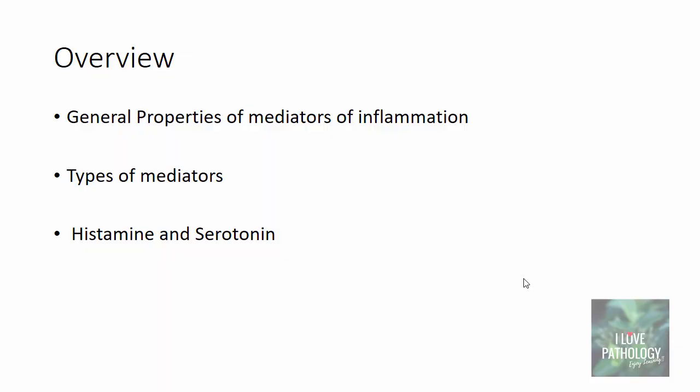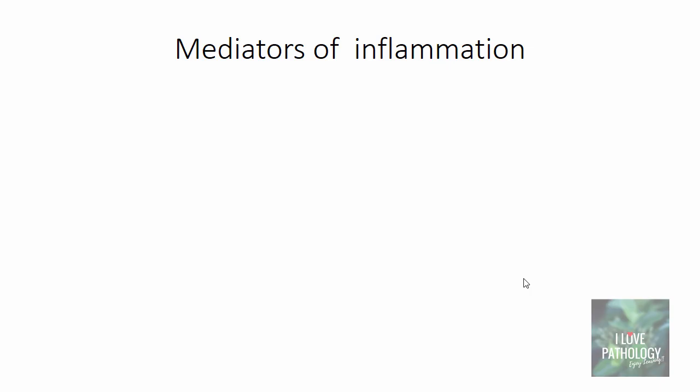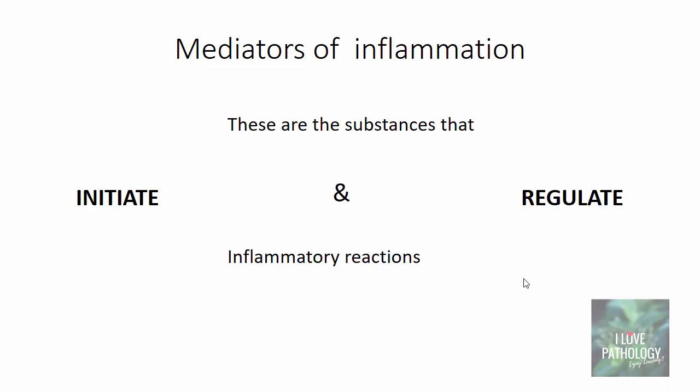In the next five to eight minutes, I will be talking about the general properties of mediators of inflammation, the various types of mediators, and in detail about histamine and serotonin. Now, what are mediators of inflammation? These are the substances that initiate and regulate inflammatory reactions. Basically, these are the substances which mediate the process of acute inflammation.